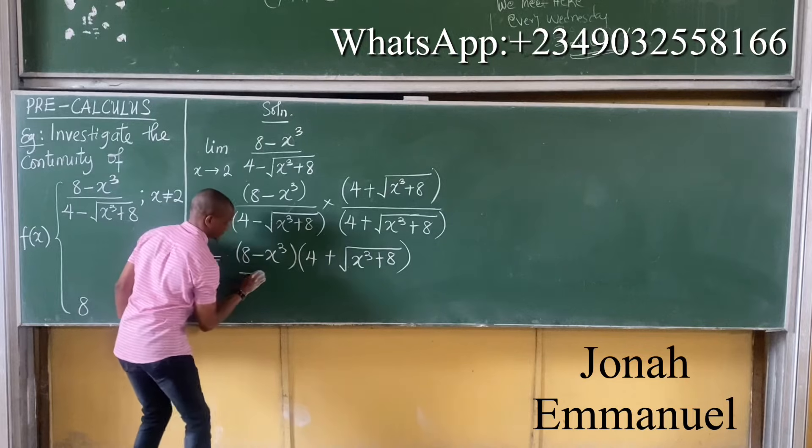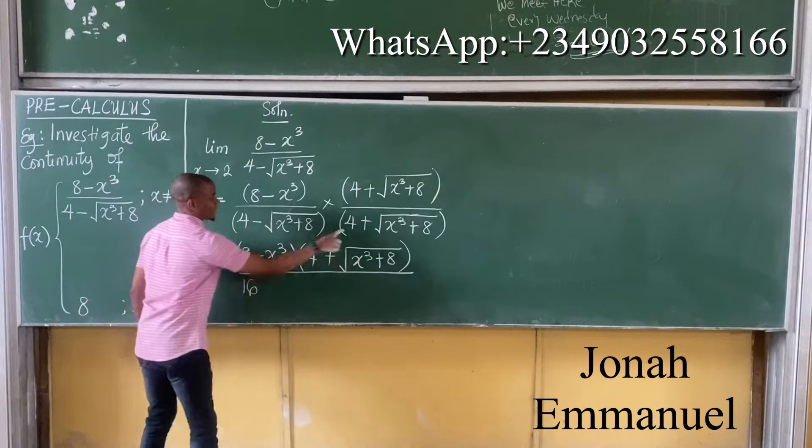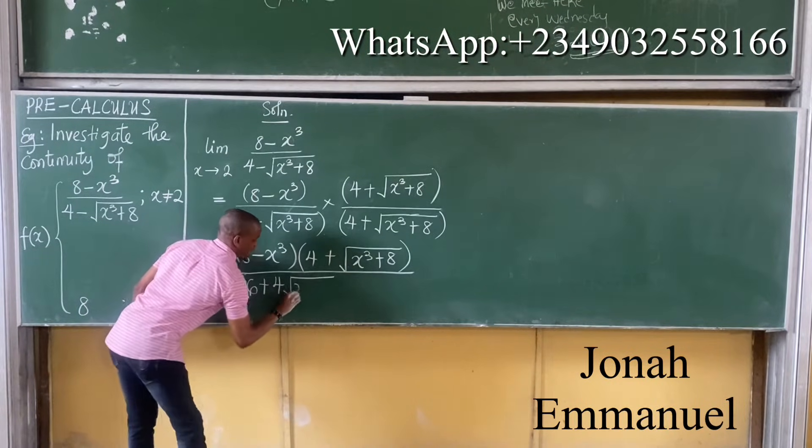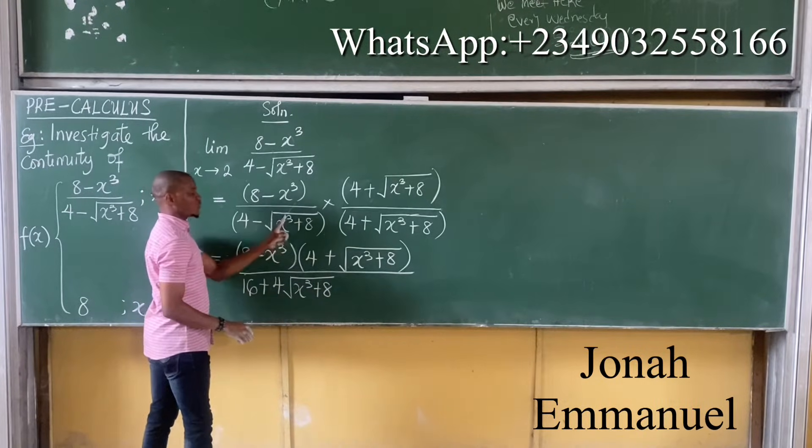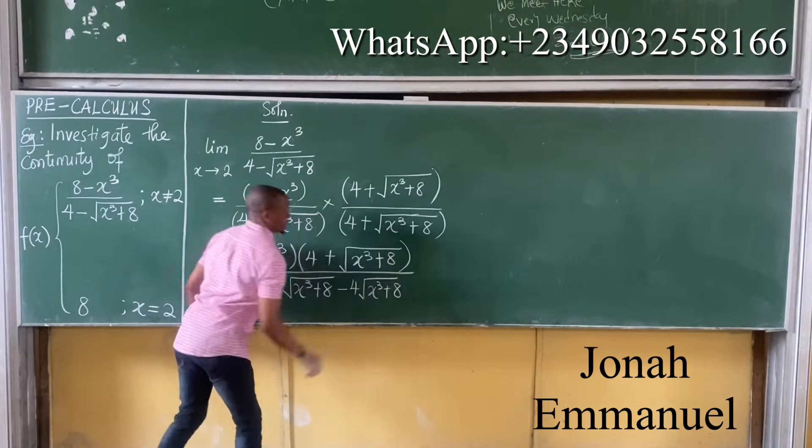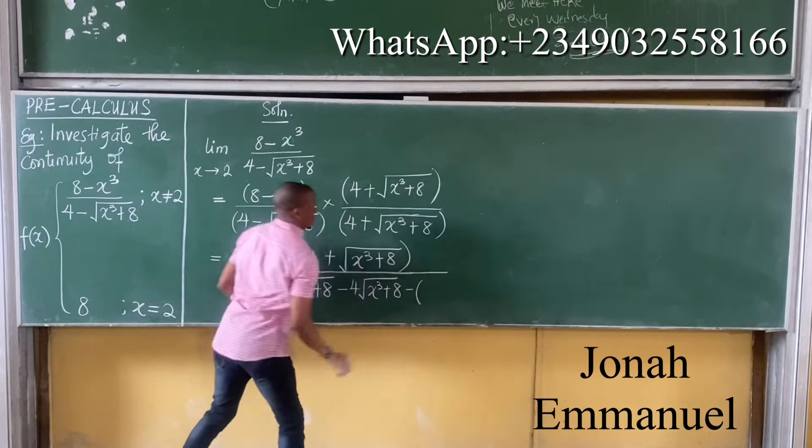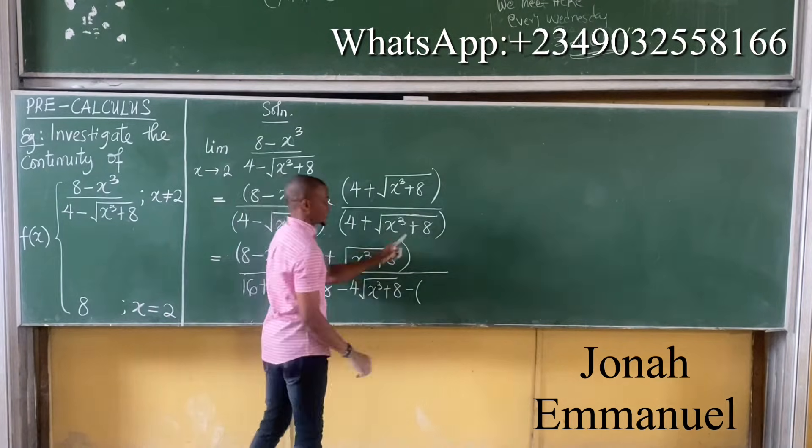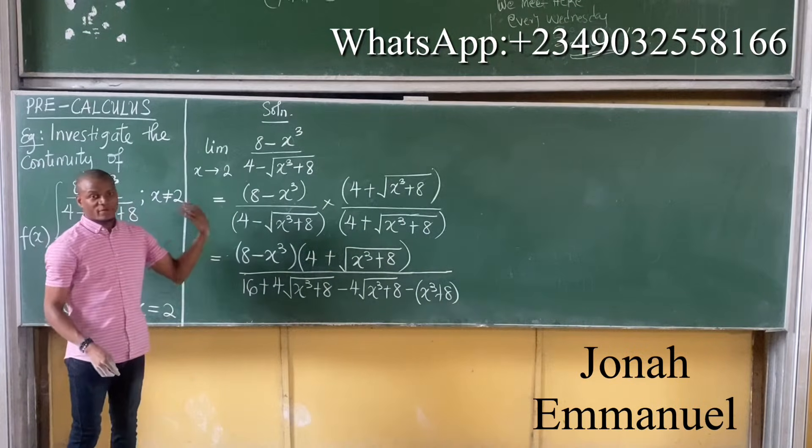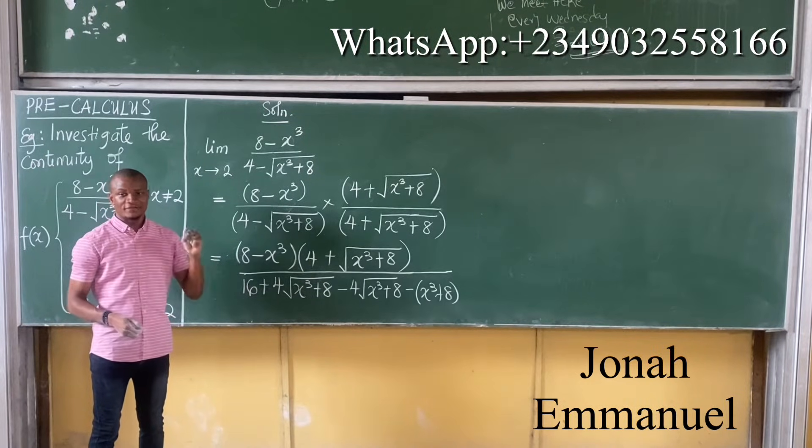All over, so I'm having 4 times 4 gives you 16. 4 times plus root x cubed plus 8 is plus 4 root x cubed plus 8, minus root x cubed plus 8 times 4 gives you minus 4 root x cubed plus 8. Next up, plus times minus is minus. Next up, root x cubed plus 8 multiplies root x cubed plus 8, this gives us x cubed plus 8. So we already discussed this concept in our previous class. We'll leave a link to our previous class on this in the description of this video below.